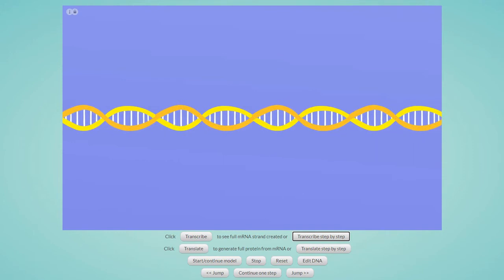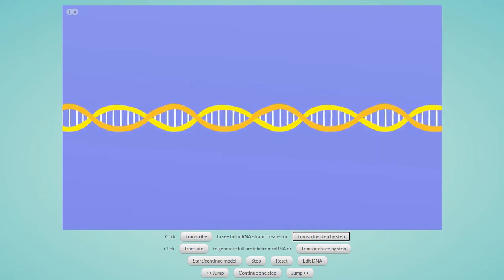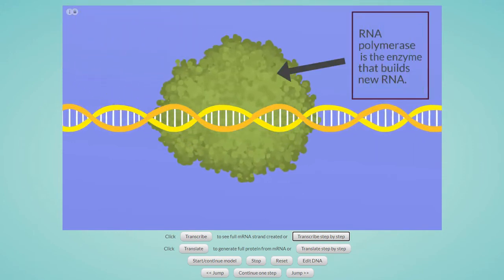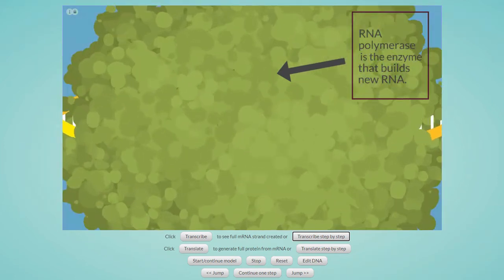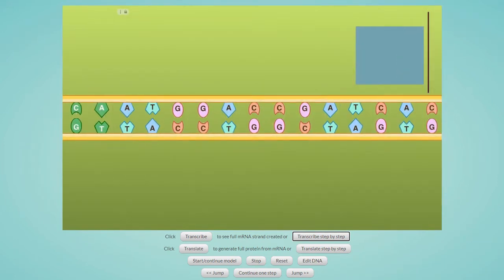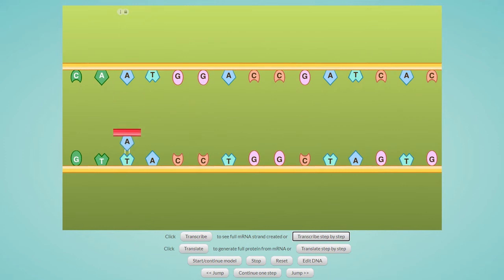The brown blob you see surrounding the DNA represents a molecule of RNA polymerase. This is the enzyme that carries out the process of transcription. Now we can see the DNA has been unwound and unzipped to show us a 2D model of this process.